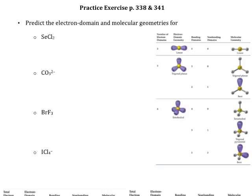These are practice exercises from pages 338 and 341 in the textbook. We're going to learn how to predict electron domain and molecular geometries for a couple of different molecules. The first thing we want to do is draw the Lewis structure. Once we draw the Lewis structure, we'll be able to figure out how many bonding domains there are on the central atom. These charts always refer to the geometry around the central atom.